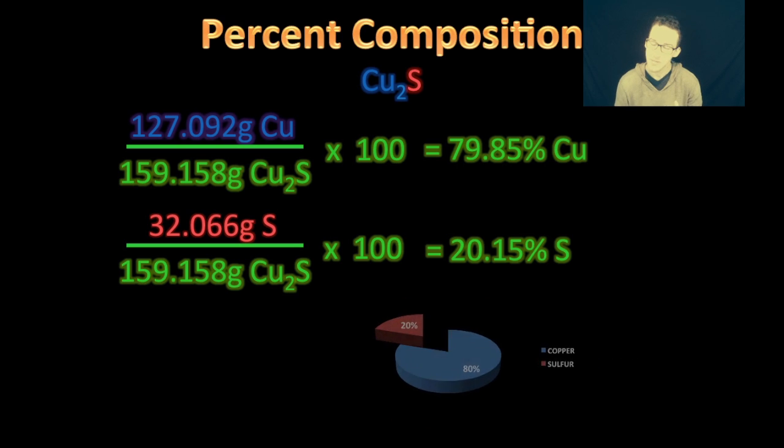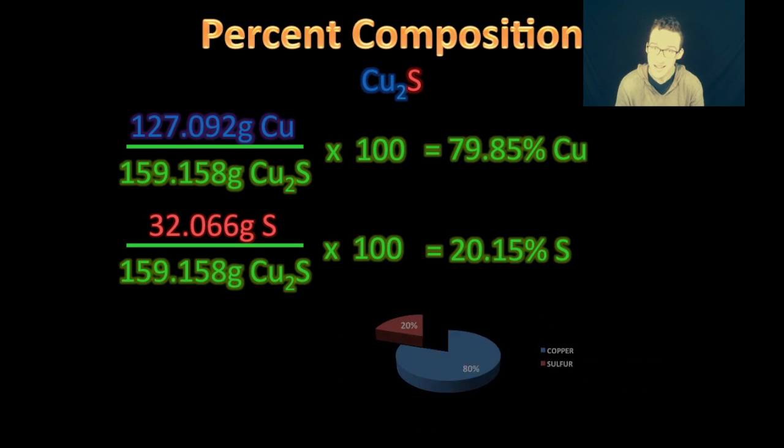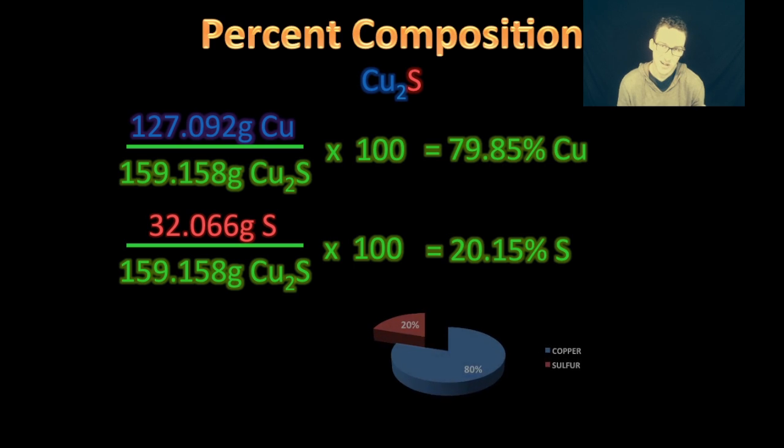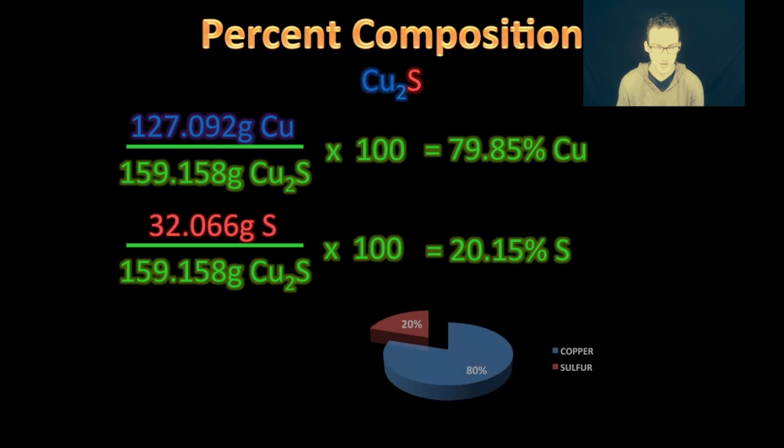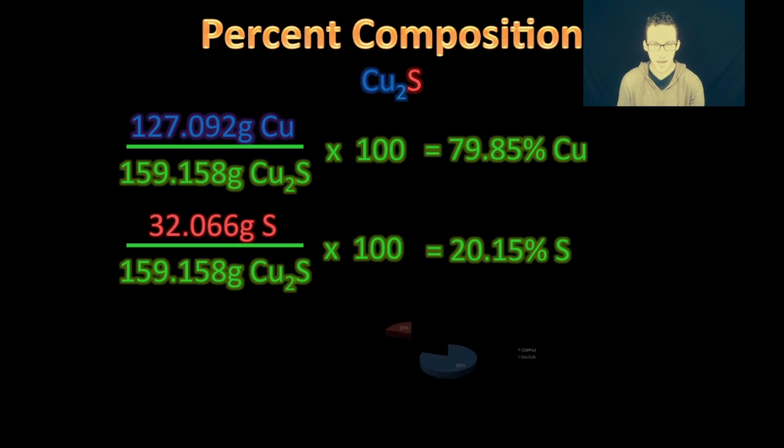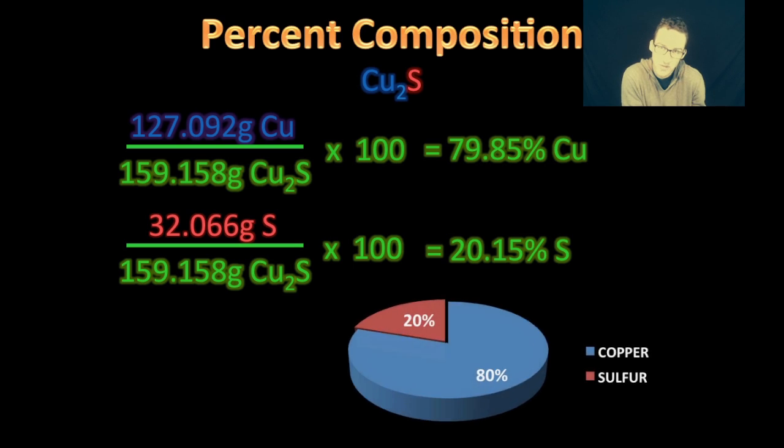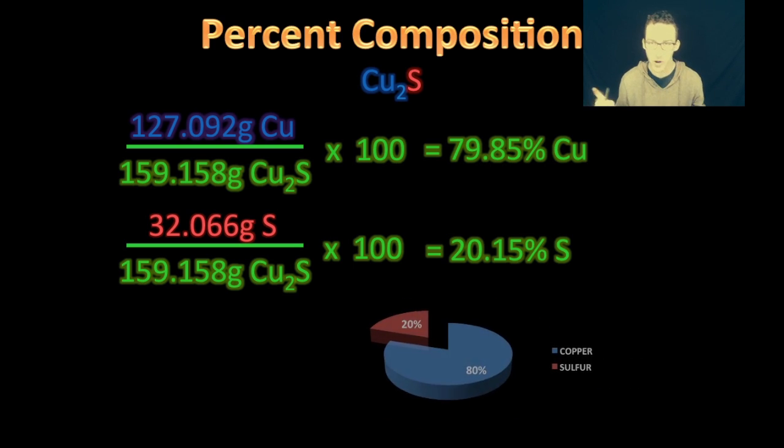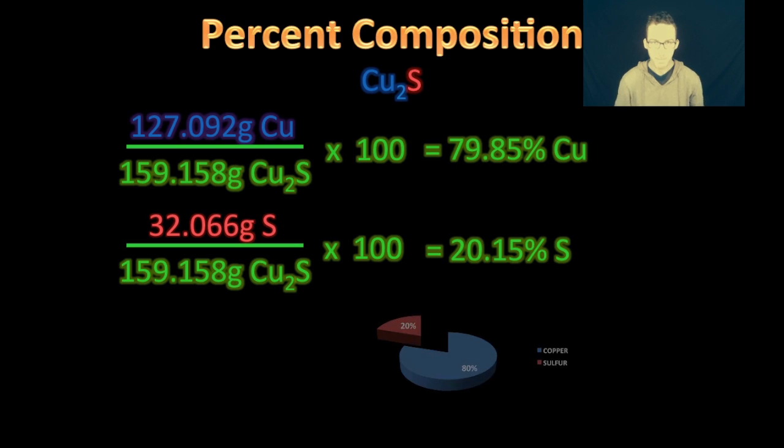The important thing to keep in mind is again, that law of definite proportions. Because the ratio of copper to sulfur in copper one sulfide is always two to one, regardless of the size of your sample, it's always going to be about 80% copper and 20% sulfur. It doesn't matter if you have a little cup of copper one sulfide or even an entire ocean of copper one sulfide, it's always going to be 80% copper, 20% sulfide. Boom percent composition and we're done.